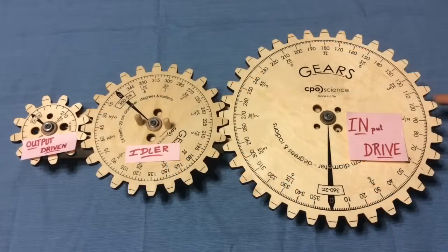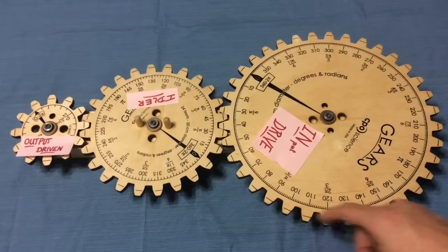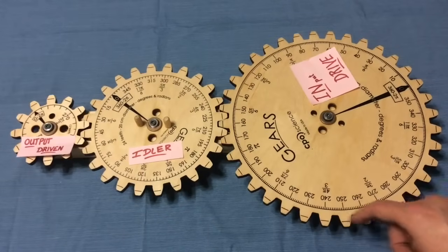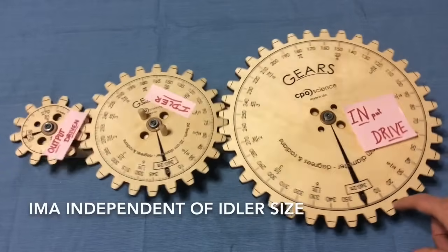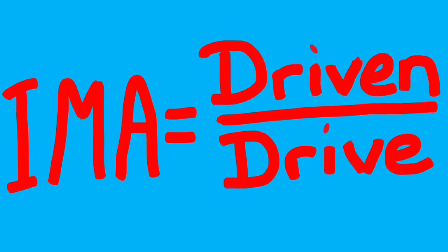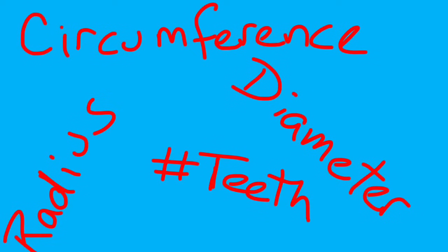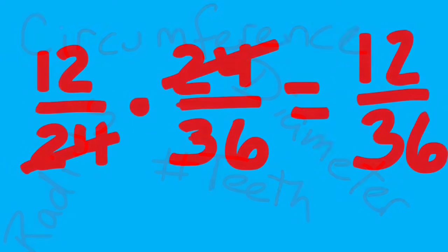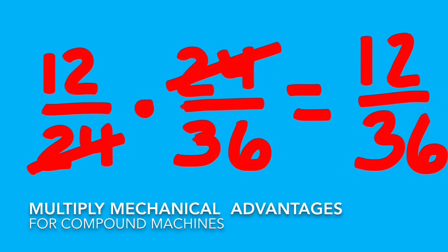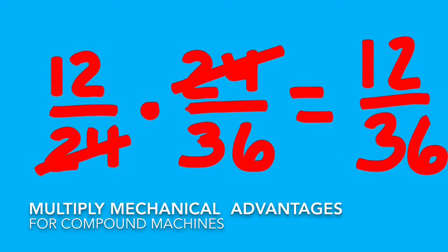And that idler gear? Crazy thing — doesn't even matter what size it is. Because if you watch the output: output travels one rotation, output travels two rotations, output travels three rotations for one input, just as what we had before. Mechanical advantage equation is driven over drive. We'll be using the number of teeth. So twelve teeth, twenty-four teeth, and thirty-six teeth is what we have. So that three-gear combination is twelve over twenty-four, and then twenty-four over thirty-six. The twenty-fours end up canceling out — that middle gear size does not matter. The idler size does not matter.